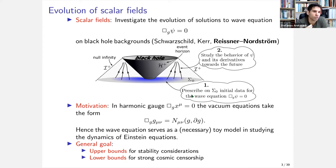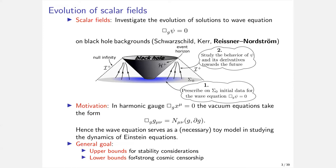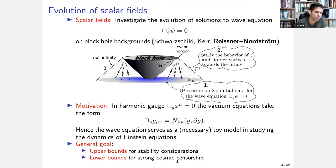My ultimate goal for this talk is to obtain observational signatures of extremality. Meanwhile, we are going to study the asymptotics of the wave equation in time, which will be useful for stability considerations and also for studying strong cosmic censorship in the interior.